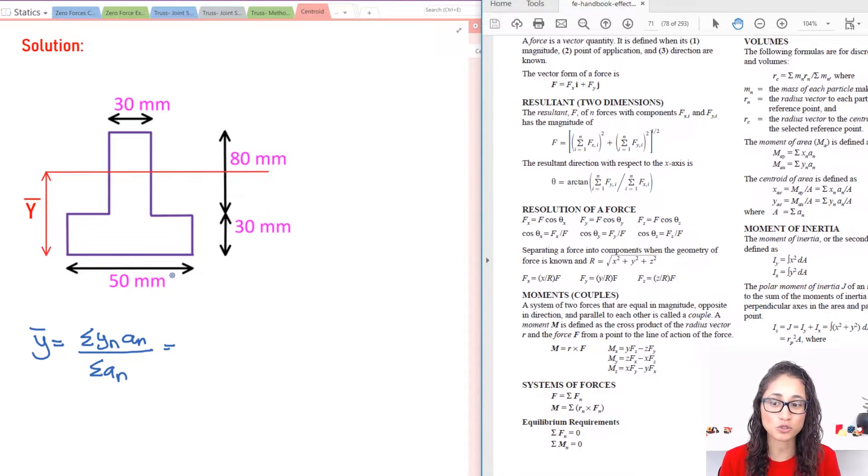So Yn is the centroid of the parts that you are working with, always referenced to the datum. Now An is the area of that part that you are working with, and divided by the summation of all the areas for the whole shape.